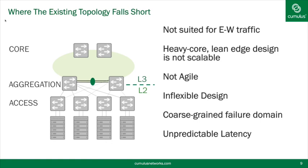Where does the existing topology fall short? The existing topology was much more geared towards north-south traffic — traffic came from outside, went to the servers, and went back out. With just two aggregation boxes, the amount of east-west communication is fairly limited. Because of Layer 2 and spanning tree, the bandwidth available in the network was itself limited, further constraining east-west traffic.